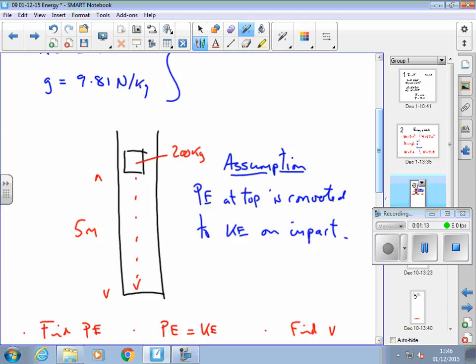I'm ignoring any losses due to friction. All that potential energy is converted to kinetic energy, so I can find that kinetic energy. It's the same as the potential energy at the top.